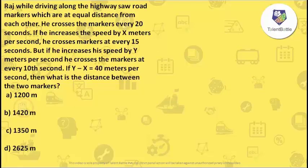Let's start with today's questions. Raj, while driving along the highway, saw road markers which are at equal distance from each other. He crosses the markers every 20 seconds. If he increases his speed by x meters per second, he crosses markers every 15 seconds. But if he increases his speed by y meters per second, he crosses the markers every 10 seconds. If y minus x equals 14 meters per second, what is the distance between two markers?